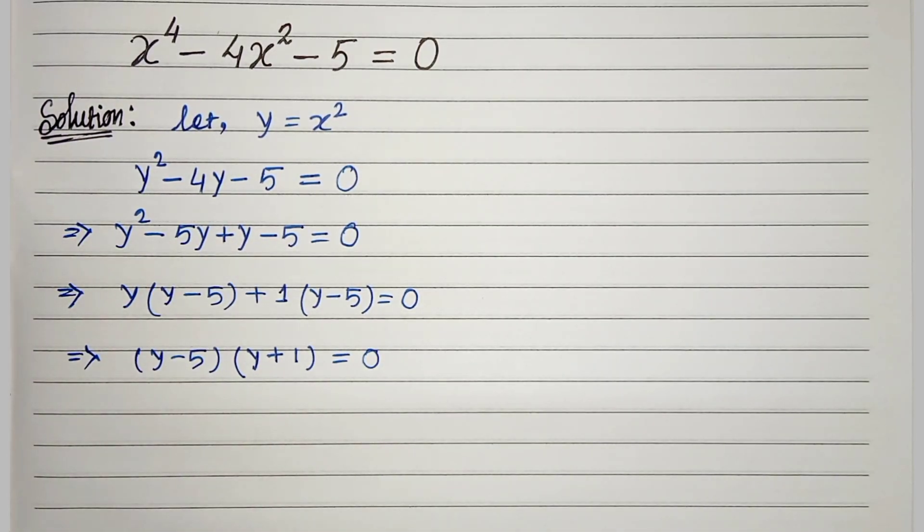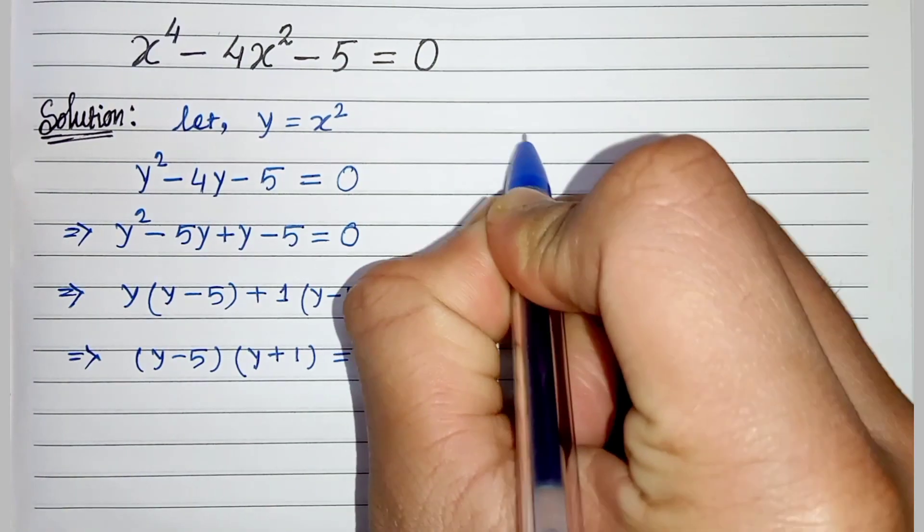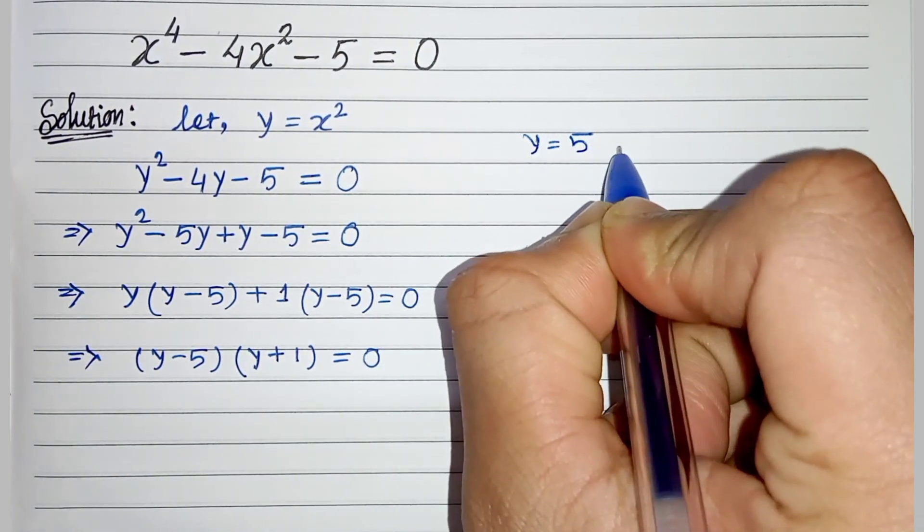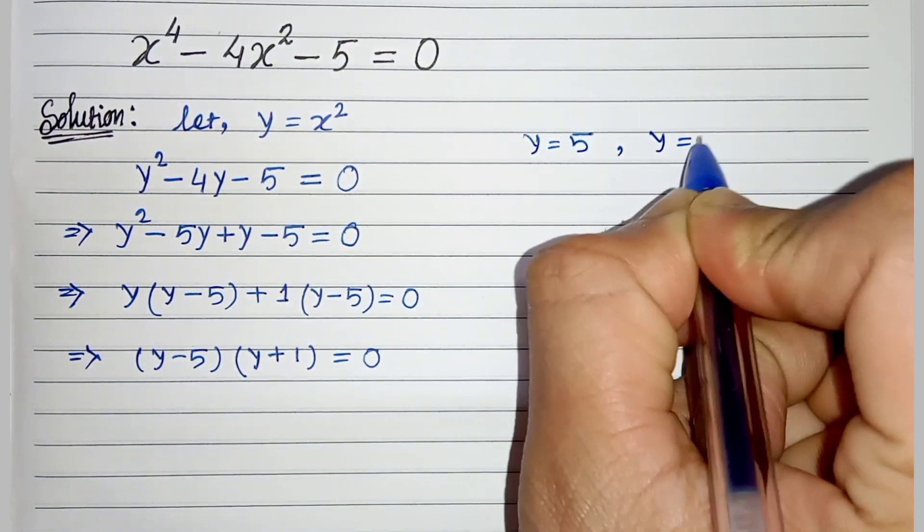So we have two values of y. One is y equals 5 and another is y equals minus 1.